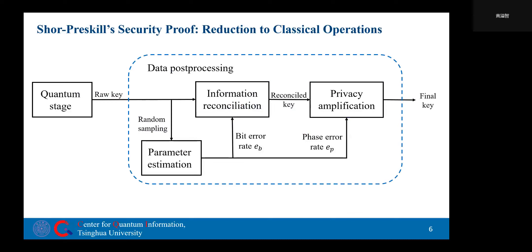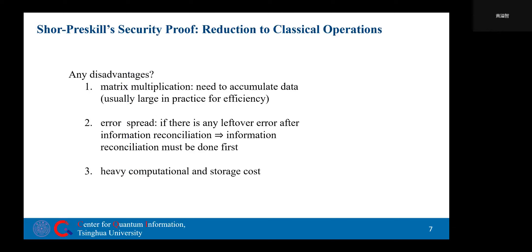However, this way of doing private amplification also has some disadvantages. For example, because this kind of private amplification is achieved by matrix multiplication, it needs to accumulate enough data before it can be processed. And in practice, this data size is often very large for efficiency. Also, if there is any leftover error after information reconciliation, it will spread to the whole key string after private amplification. That's also why we have to do information reconciliation first.